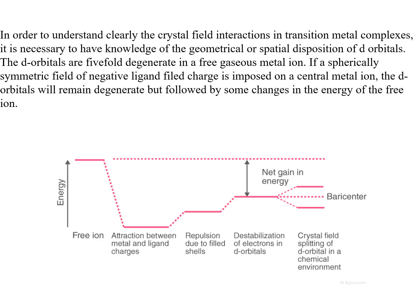In order to understand the crystal field theory interaction in transition metal complexes, it is necessary to have knowledge of the geometrical or spatial arrangement of d orbitals. The d orbitals are 5-fold degenerate in a free gaseous metal ion. If a spherically symmetrical field of negative ligand charge is imposed on a central metal ion, the d orbitals will remain degenerate but there will be some changes in the energies of the free ion. In the free ion, energy increases due to attraction between the metal and ligand charges and repulsion, leading to destabilization of electrons in the d orbital and splitting of d orbitals in the chemical environment.